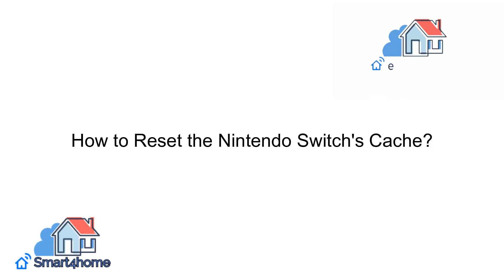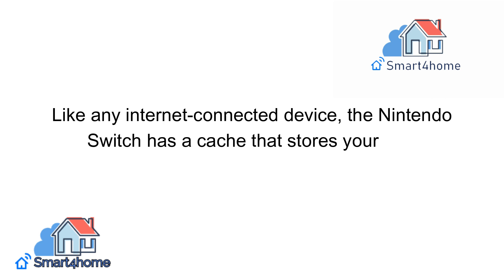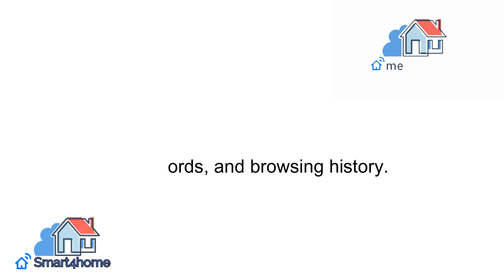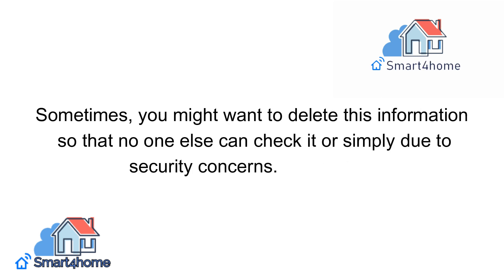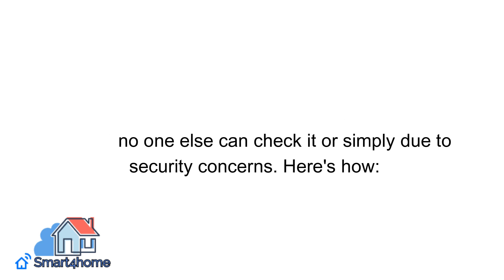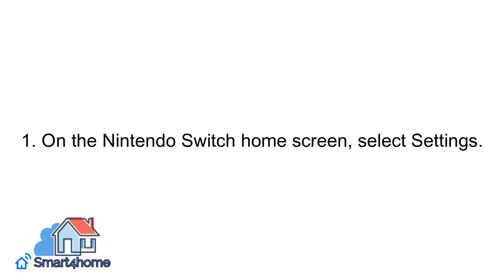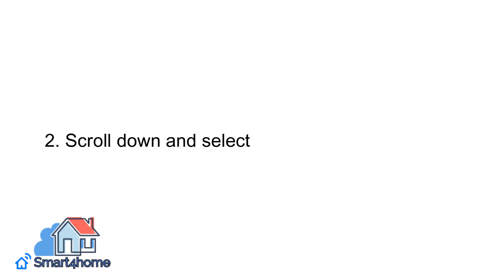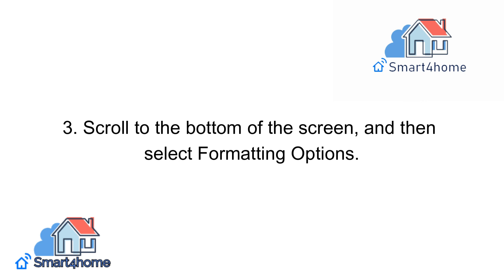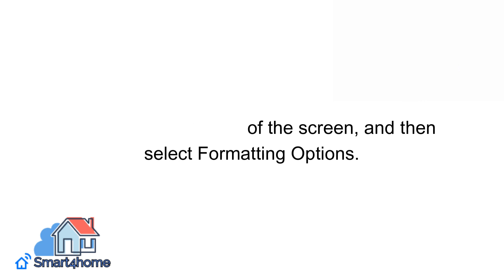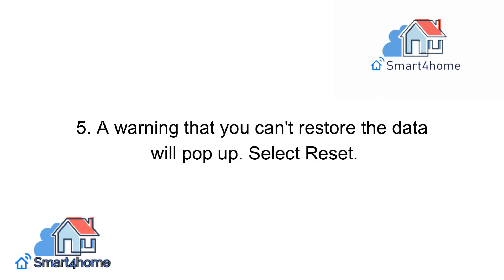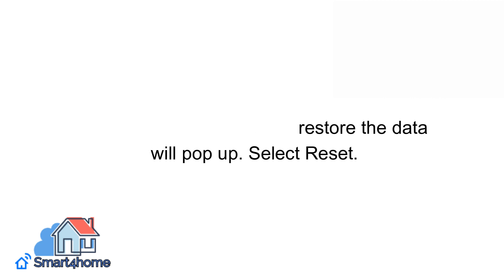How to reset the Nintendo Switch's cache. Like any internet-connected device, the Nintendo Switch has a cache that stores your IDs, passwords, and browsing history. Sometimes you might want to delete this information so that no one else can check it, or simply due to security concerns. Here's how: 1. On the Nintendo Switch home screen, select Settings. 2. Scroll down and select System on the left menu. 3. Scroll to the bottom of the screen and then select Formatting Options. 4. Select Reset Cache. 5. A warning that you can't restore the data will pop up. Select Reset.